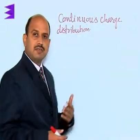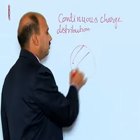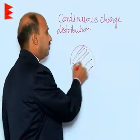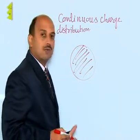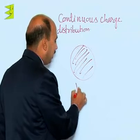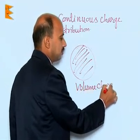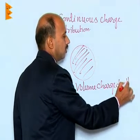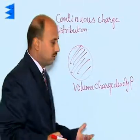After surface charge density, suppose you have taken a sphere, and in this sphere the charges are distributed. Then we have to use volume charge density. Volume charge density is rho. Sometimes we can say only charge density.